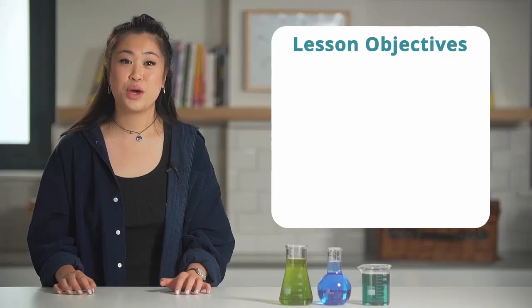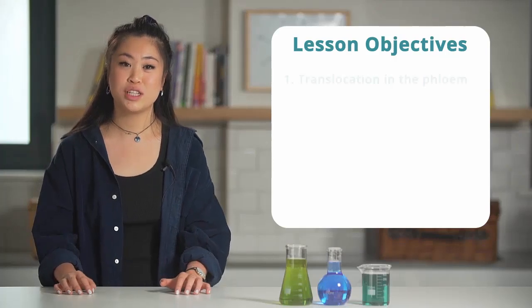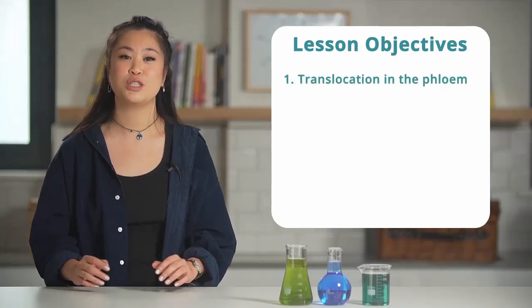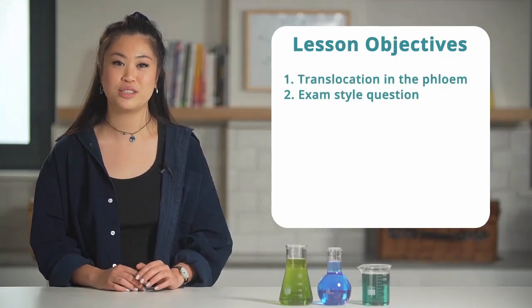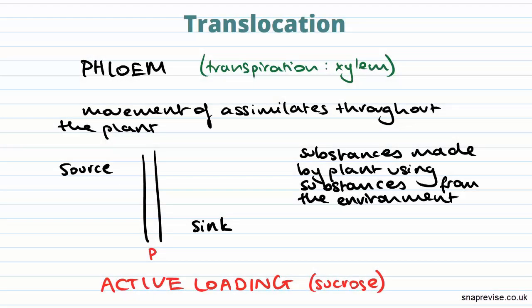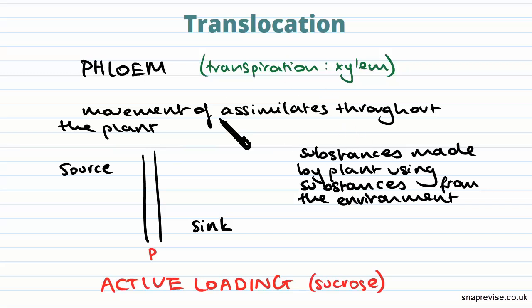Hi guys, in today's video we will talk about translocation in the phloem and we will finish with an exam style question. Translocation occurs in the phloem and refers to the movement of assimilates throughout the plant.